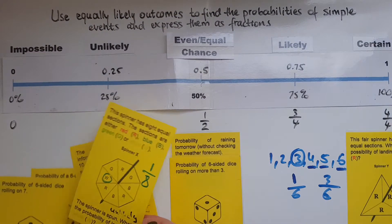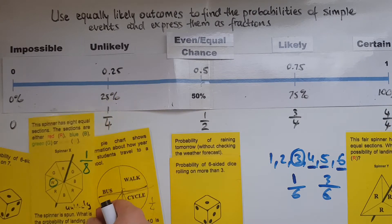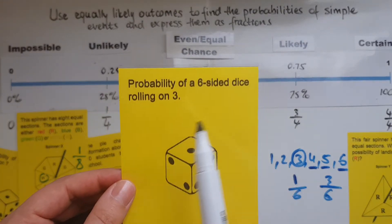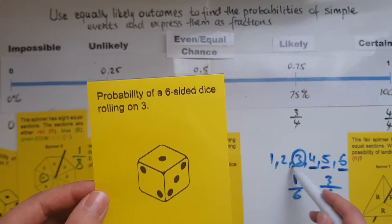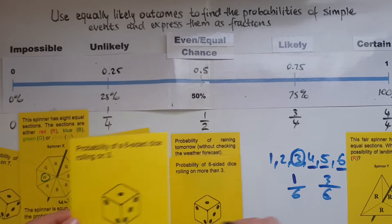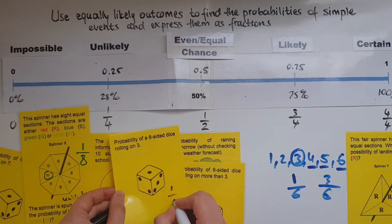And we have the probability of a six-sided die rolling on three. So three was just one out of the six. So that is one sixth.